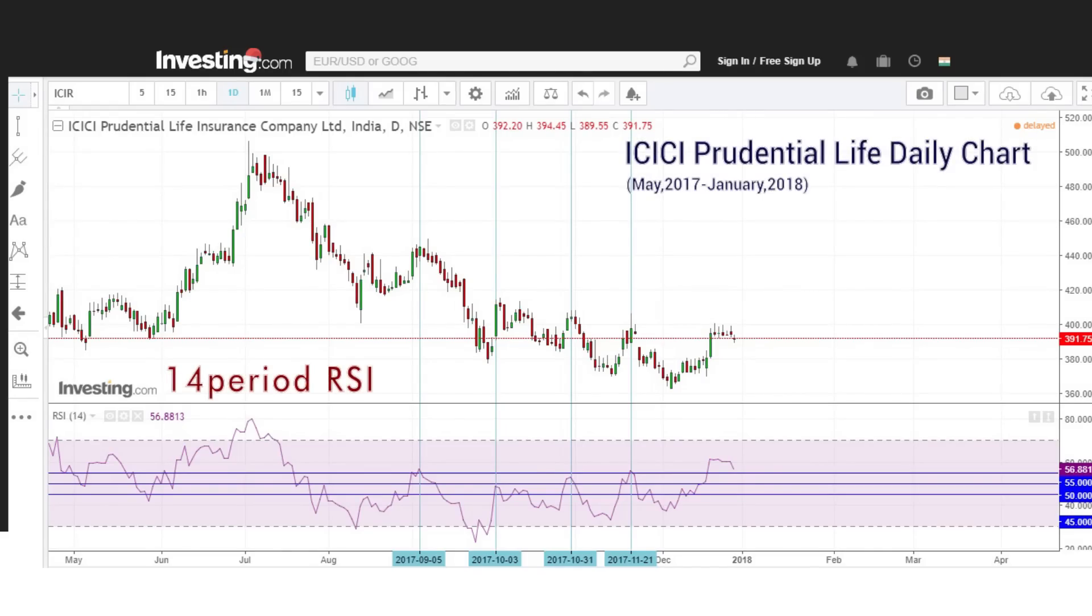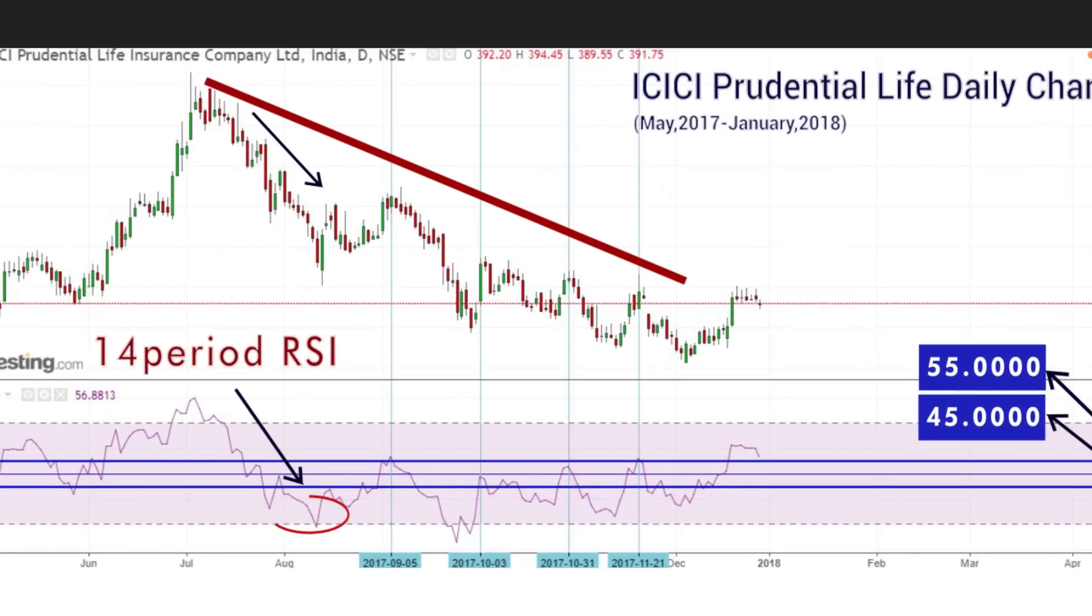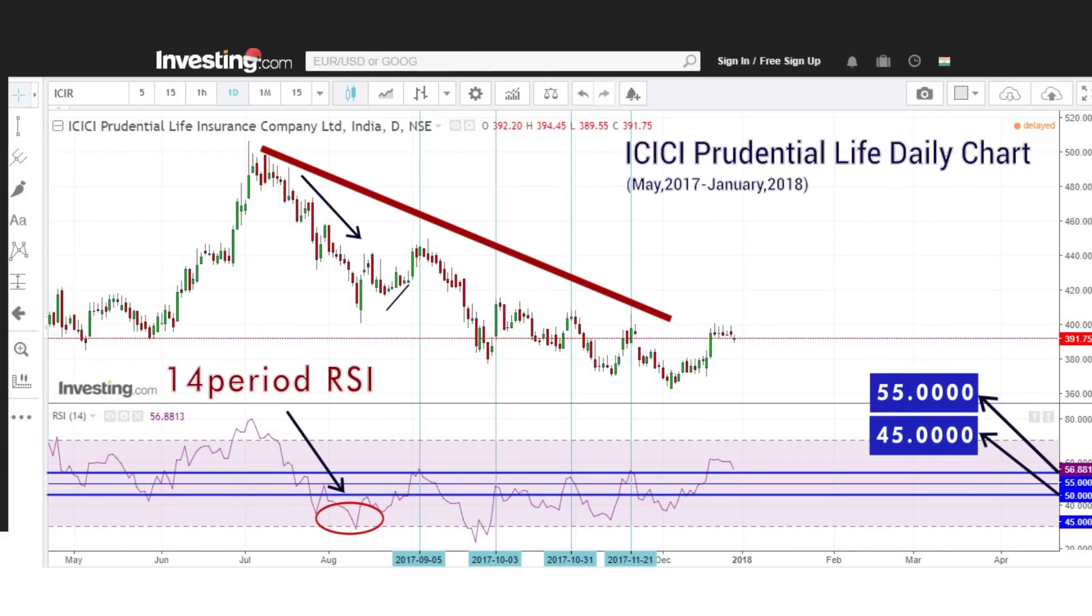Here, we can see in the ICICI Prudential Life Insurance Stock chart, what we could see that since July, the stock is having a steady down move. But after the initial thrust downward, we could see multiple times the stock had minor pullback.